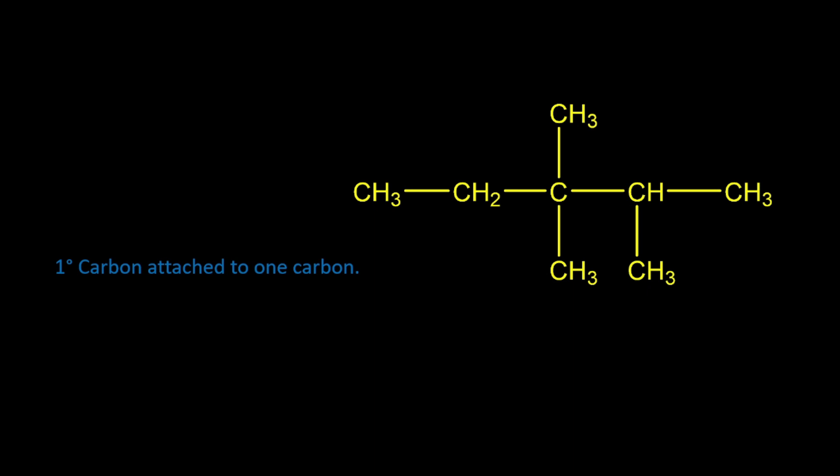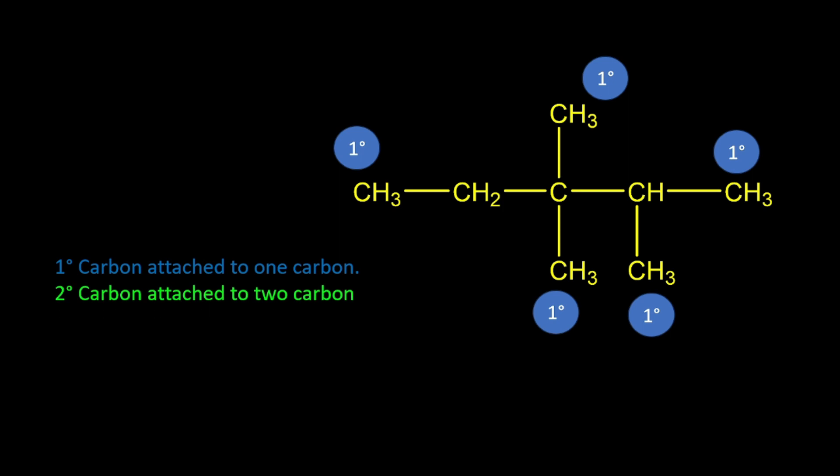Primary carbon means the carbon that is attached to one carbon atom. So this is primary, this is a primary atom, this is a primary carbon. Next, secondary carbon atom - the carbon which is attached to two carbon atoms.